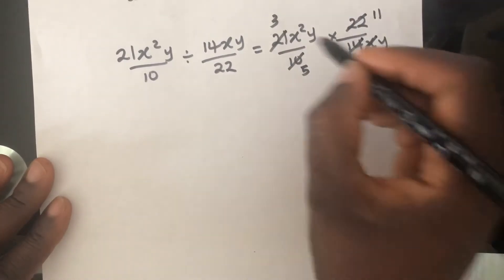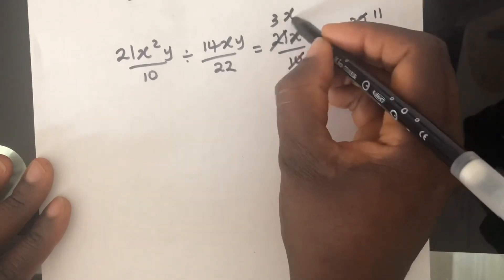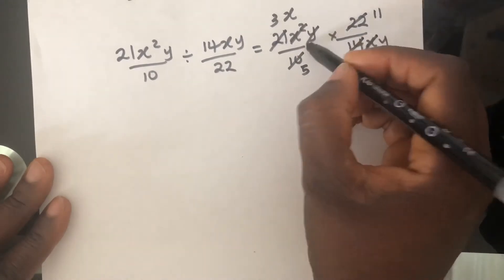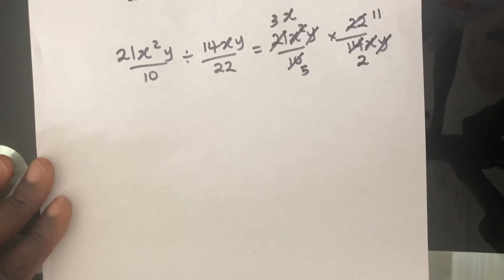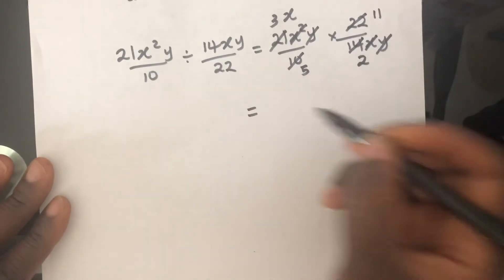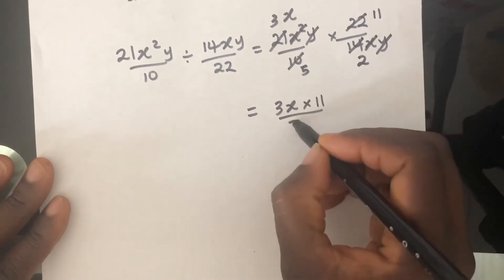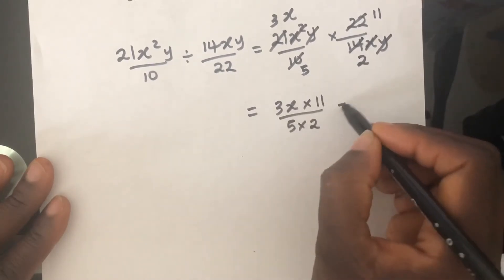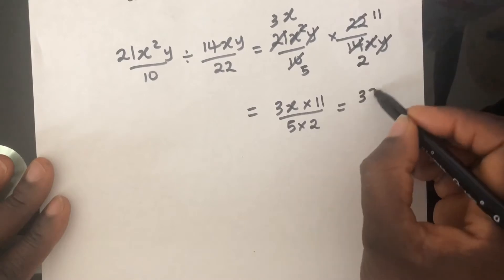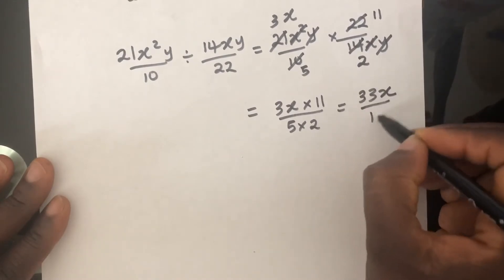We got X here and we got X squared here. So we'll be left with one X here. We got Y here and Y here. So Y is all gone, all canceled. So what do we have left on the top? We have 3X times 11 over 5 times 2. This is going to give us 33X over 10.